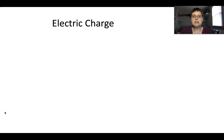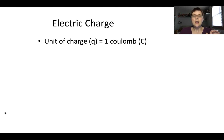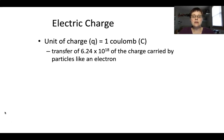We're going to pick back up, still talking about things like electric charge, and now we're going to talk about other properties related to electricity. We talked about electric charge related to positive and negative charge — that is measured in coulombs. The unit of charge is represented by little q, and one coulomb is equal to the transfer of 6.24 times 10 to the 18th charge carried by particles like electrons.